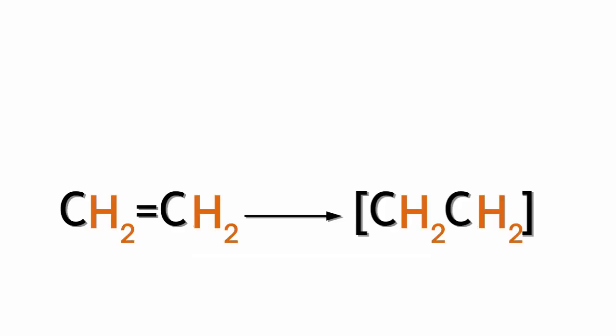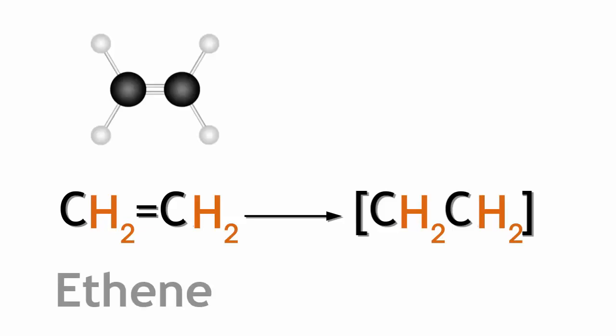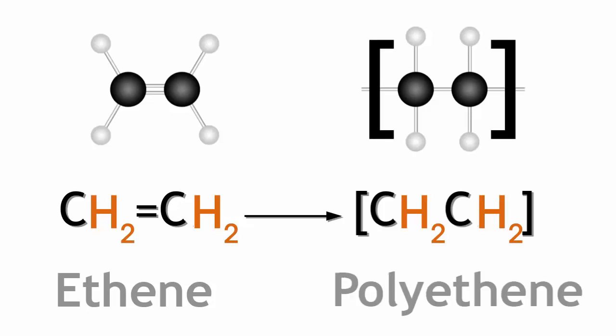To write an equation for the polymerization of ethene, you should first start with the reactant ethene. To show the polymer product, we must break the double bond and extend the covalent bond outside of either side of the square bracket. This shows us that it is this unit that is repeating along the molecule's long chain.